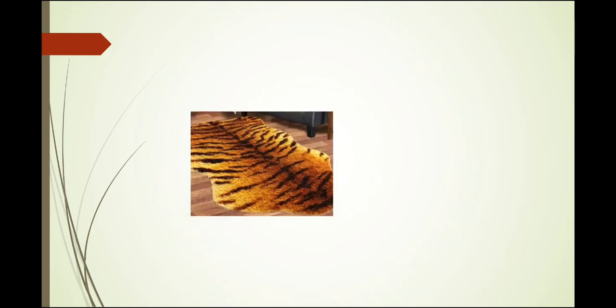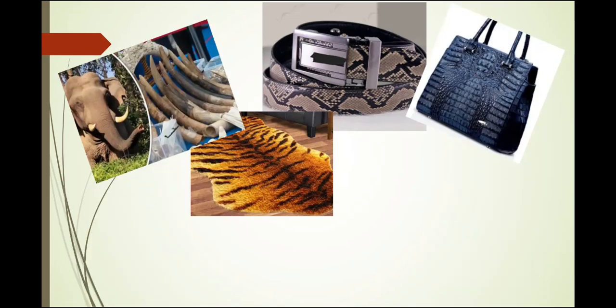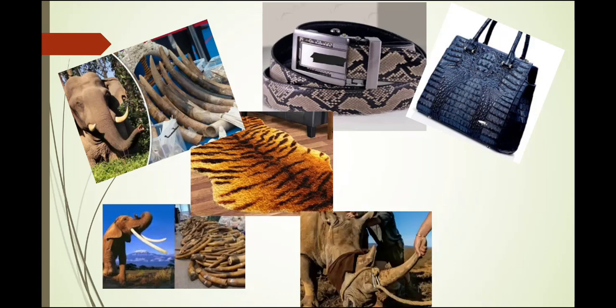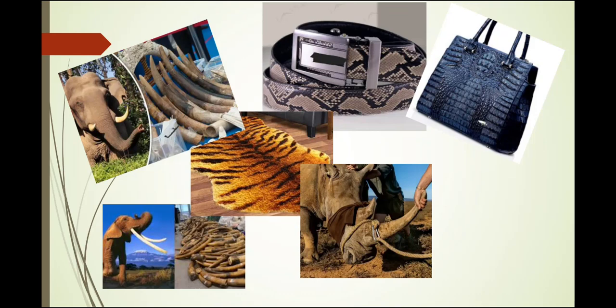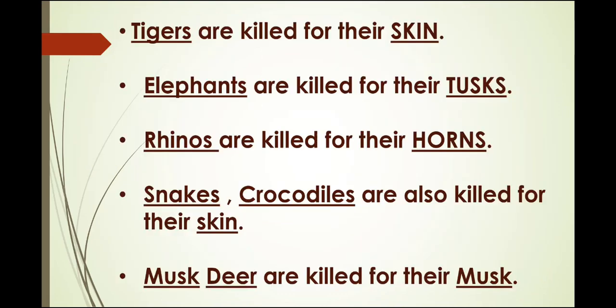Here are a few things made out of animal skin — like this carpet made out of tiger skin, this leather belt made out of snake skin, and this bag made from crocodile skin. Elephants are killed for their tusks, as these tusks are very costly. Rhinoceros are also killed for their horns. Sometimes we humans are so cruel that to earn money we kill innocent animals, which is not right. Everyone has a right to live, be it humans or animals. Tigers are killed for their skin, elephants for their tusks, rhinos for their horns, and snakes, crocodiles, and musk deer are also killed for their skin and musk.